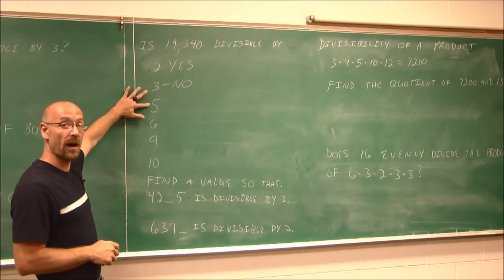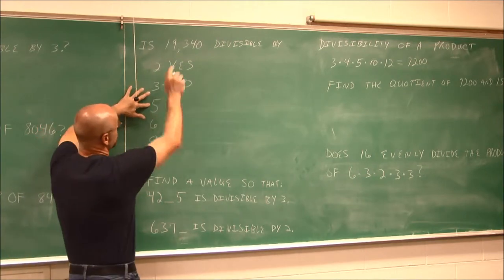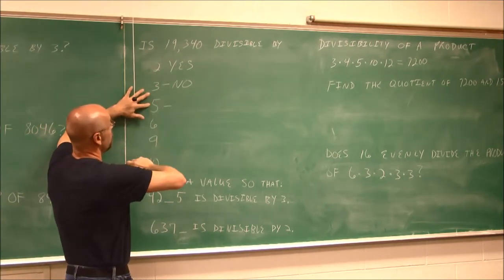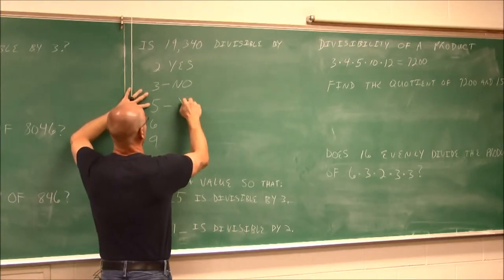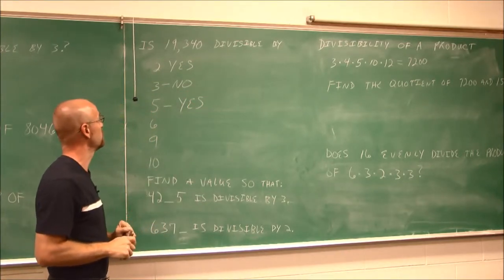Is it divisible by 5? Well, we just look at the last digit. It's a 0. So if it was a 0 or 5, it's divisible by 5. So this number ends in 0, it is divisible.